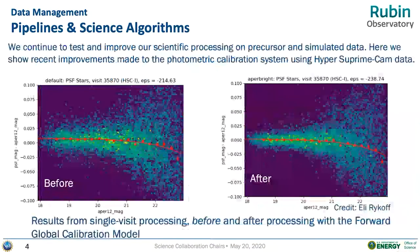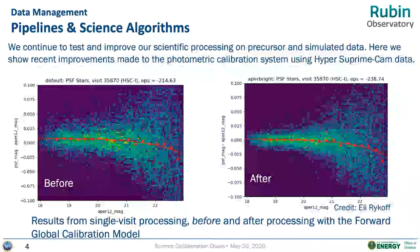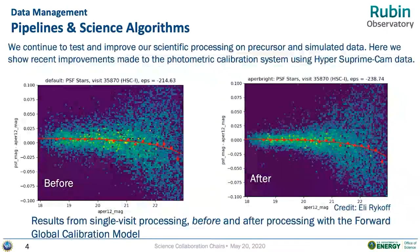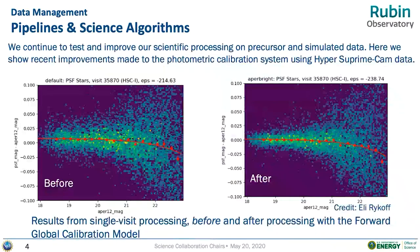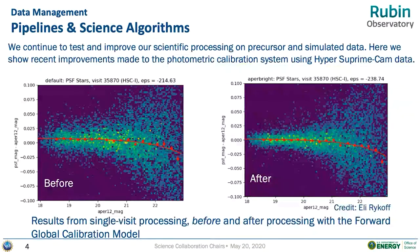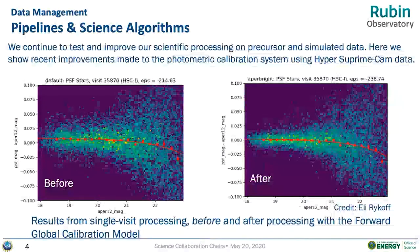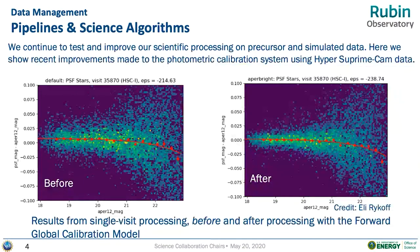On the calibration side in data management, Release 19 now has the forward global calibration modeling incorporated. You can see the difference in the processing of HSC Prime data with and without the global calibration modeling applied — clearly on the right-hand panel you can see the increased tightness of the locus in the stellar photometry.